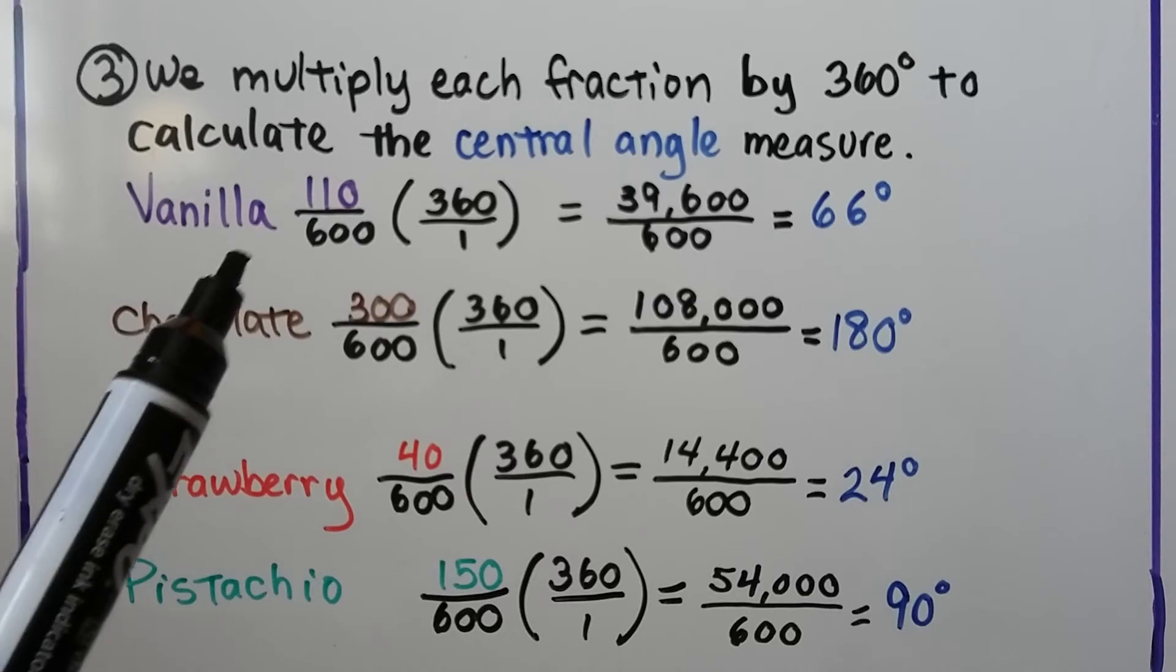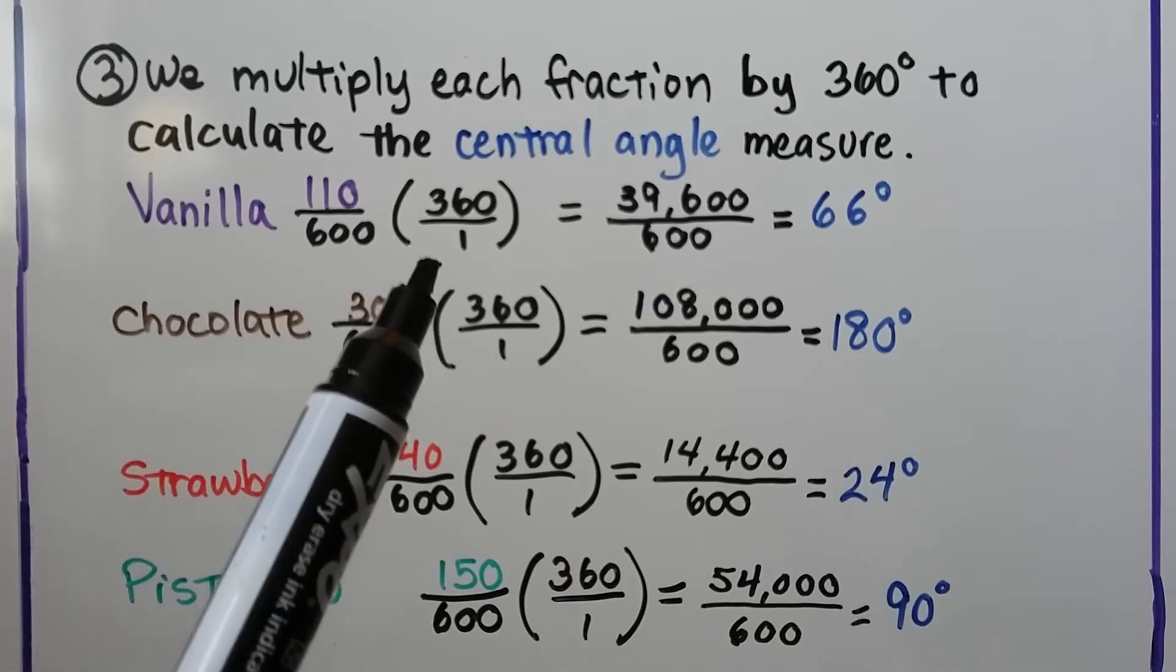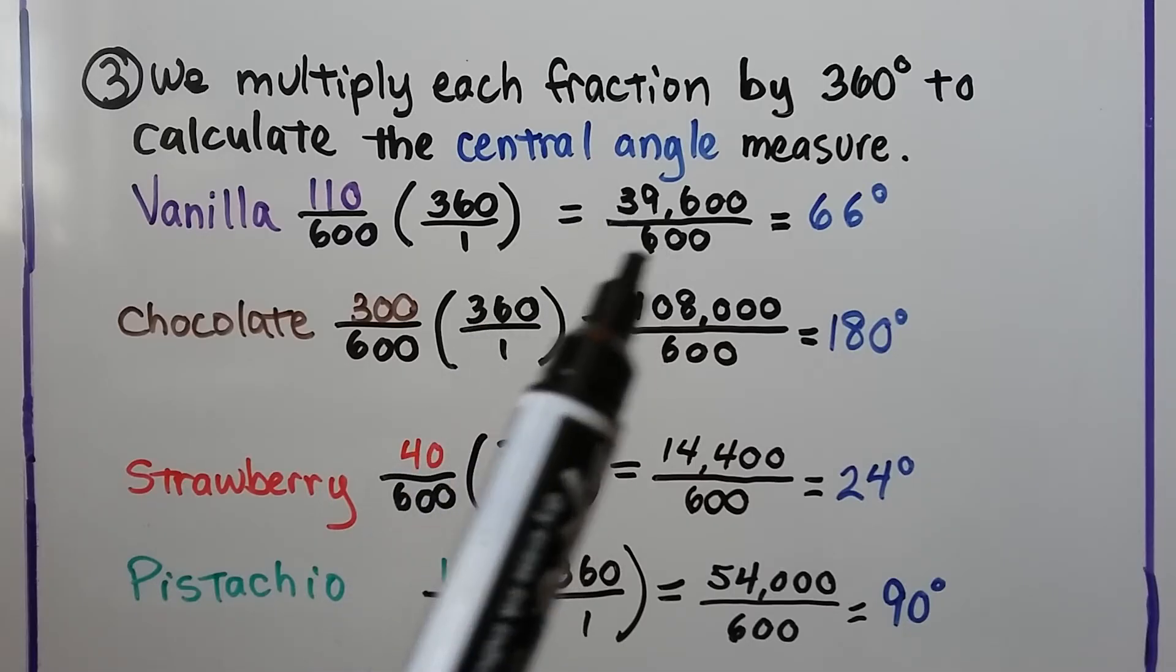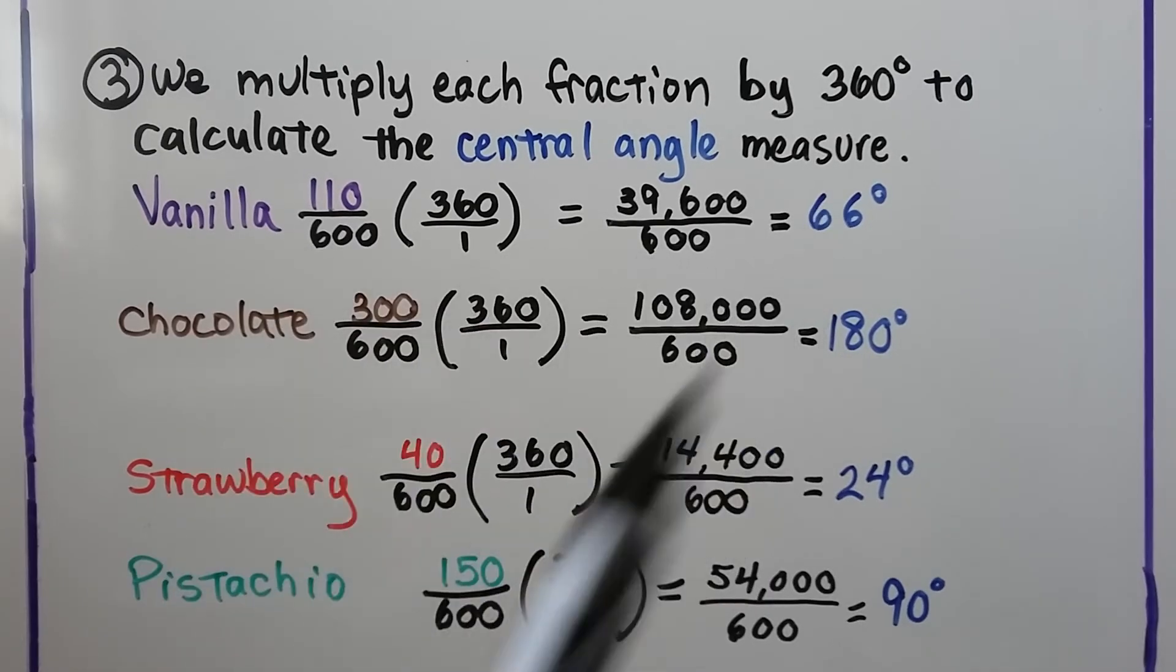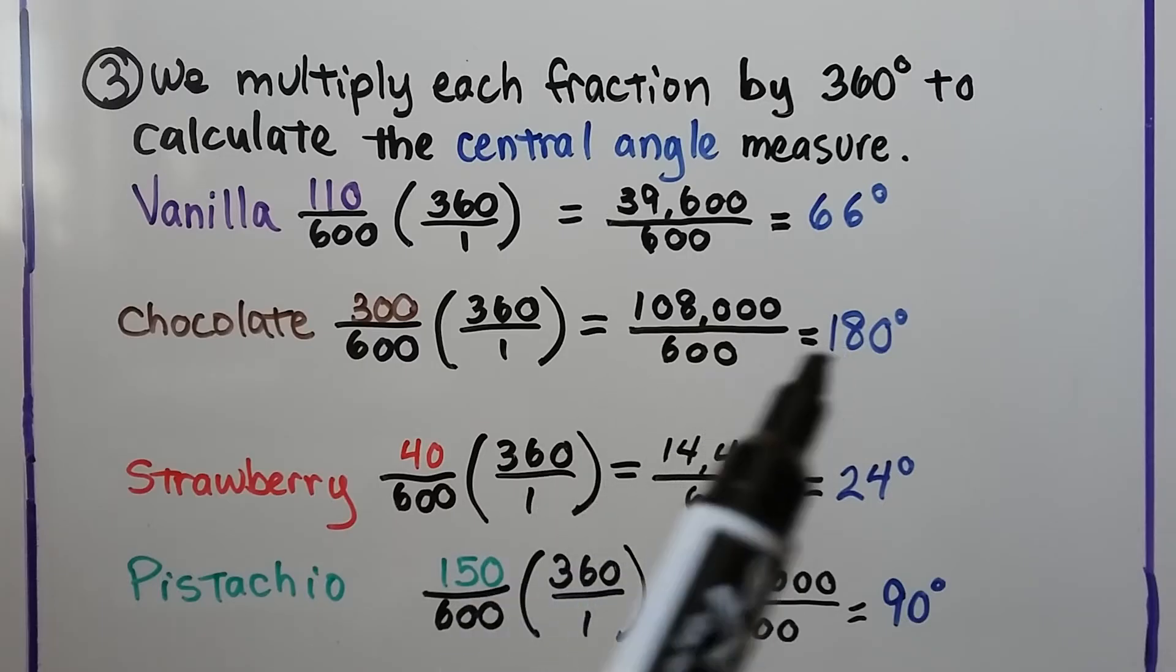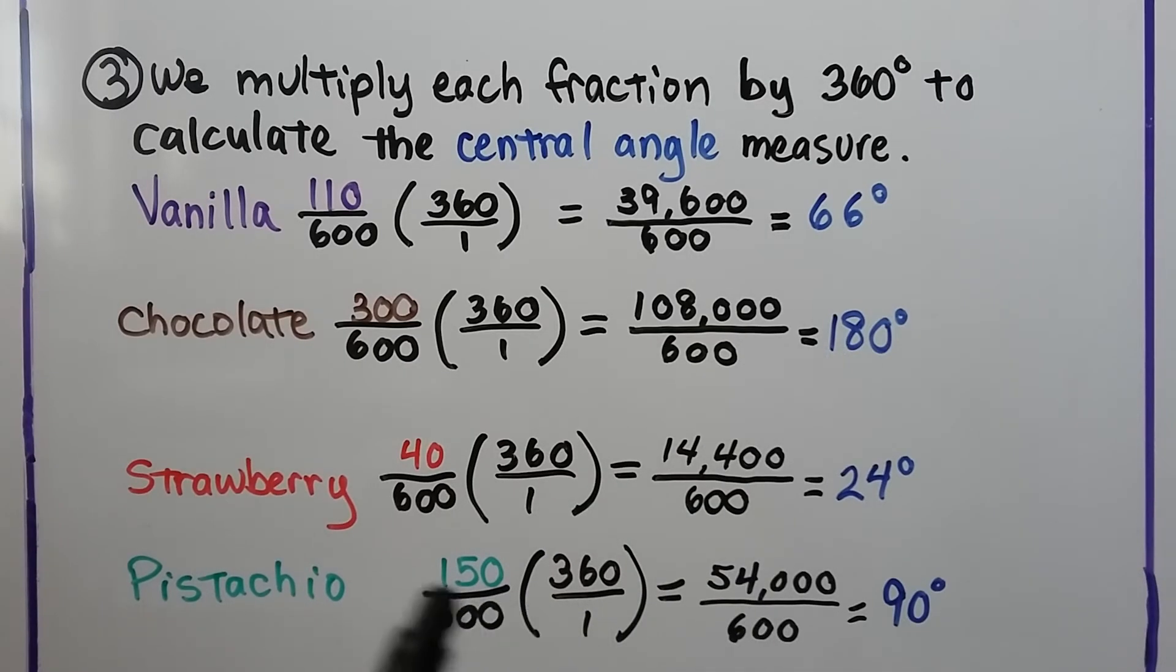So our vanilla fraction is multiplied by 360. We get 39,600. We divide it by that 600 and get 66 degrees. We do the same thing for chocolate, strawberry, and pistachio. We do our multiplication and our division. For chocolate, we get 180 degrees. For strawberry, we get 24 degrees. For pistachio, we get 90 degrees.